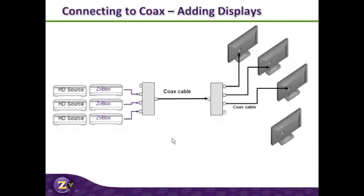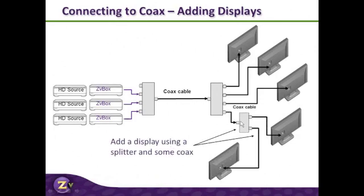Let's talk about adding that display. Simple system: ZV boxes with sources, combined, all living on this one coax, now being split to multiple TVs, and we want to add another TV. So this piece of coax was running to the TV — we're simply going to add another splitter off that feed and add two more TVs. Very, very simple.